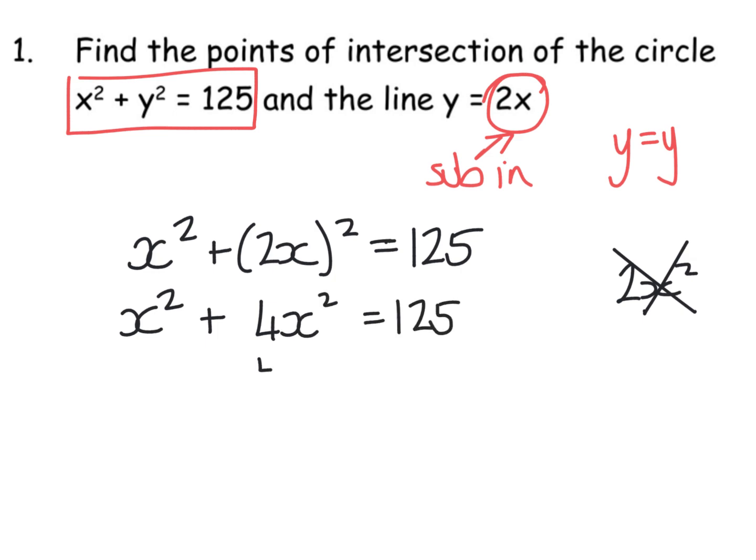Tidy this up. x² + 4x² gives you 5x² = 125. x² is that divided by 5, which is 25. And when you square root 25, please remember you get two answers: plus or minus 5.